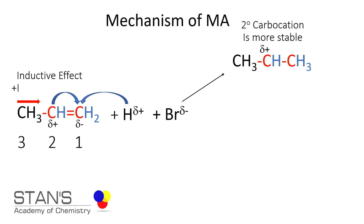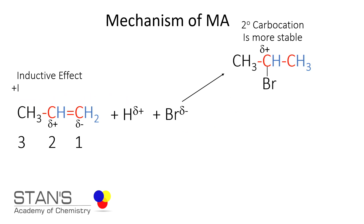This is called a secondary carbocation. Secondary carbocations are more stable because they have two alkyl groups on either side, which are capable of a positive inductive effect — they pump electrons into the second carbon atom from both sides, stabilizing the carbocation. The two-degree carbocation is also called a secondary carbocation. The bromide ion seeks positive charges; therefore, it attaches itself to the secondary carbocation, forming 2-bromopropane, which is the major product.